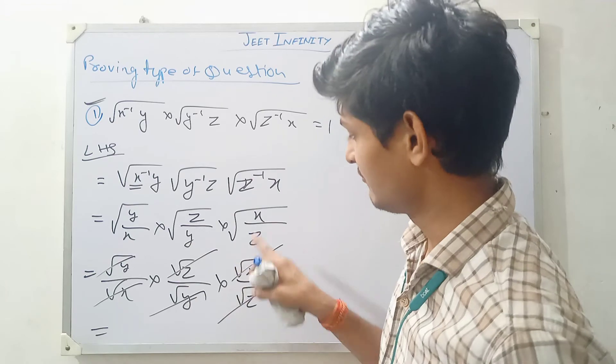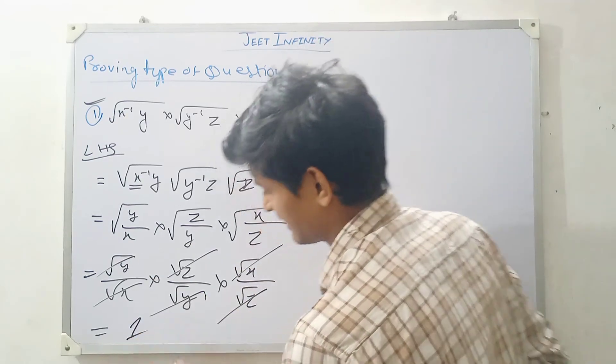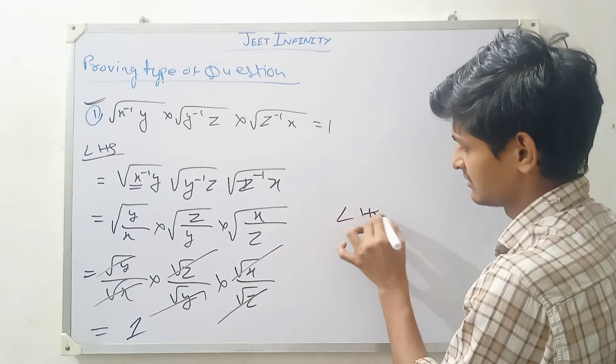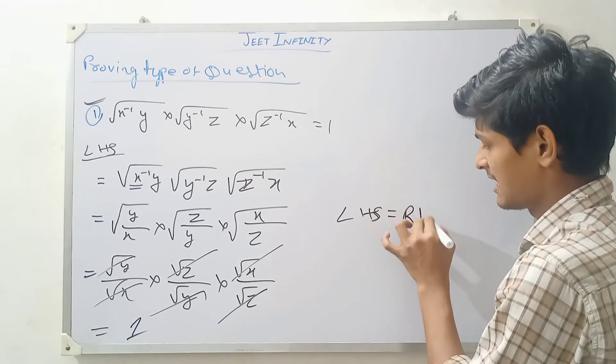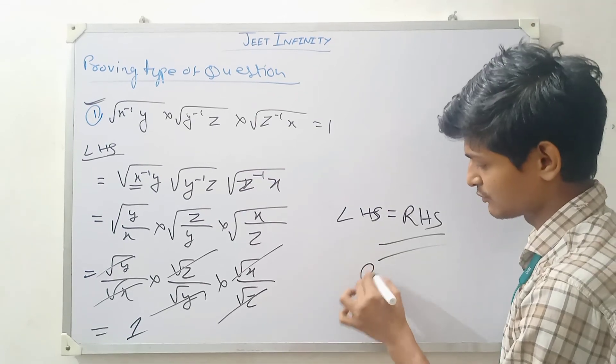When you have fraction value, so if you have all cancel out, then it will be 1. And hence, here proof LHS equal to RHS. LHS equal to RHS proof.